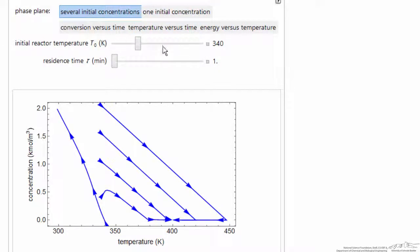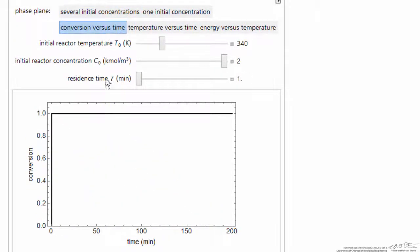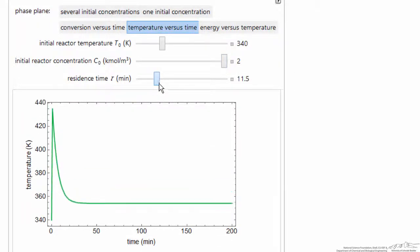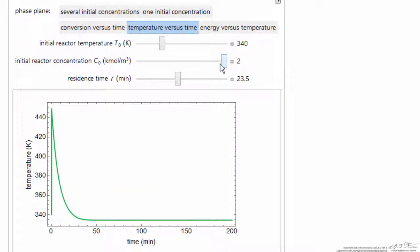We also can look at how conversion versus time and temperature versus time behave. Notice the overshoot in temperature. If we go back to the conditions where we can have oscillations,